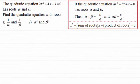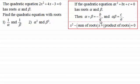In this video I want to extend the work from the previous video, where I showed you that if a quadratic equation has roots alpha and beta, then the sum of the roots alpha plus beta equals minus b over a, and the product of the roots alpha beta equals c over a. Any quadratic equation can be expressed in terms of its roots as x squared minus the sum of the roots times x plus the product of the roots equals zero.